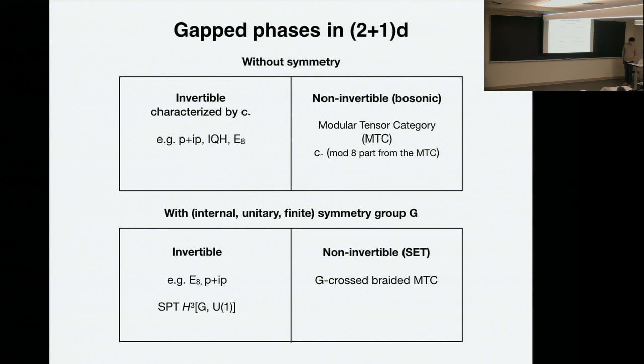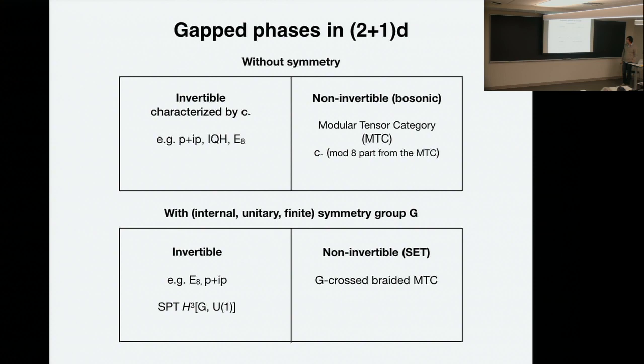And the non-invertible ones — so this E8 here and E8, they're the same theory, right? You can just have an E8 and the symmetry doesn't do anything — it's still an interesting state. And of course you can tack it on various SPT phases. On this side you have now what's called a G-crossed braided modular tensor category — basically a very detailed description of how symmetry can act in a modular tensor category.